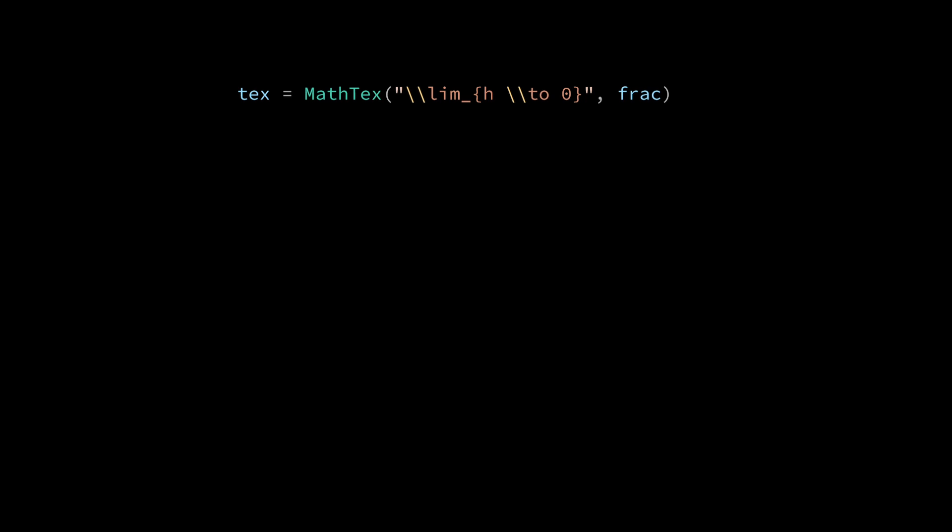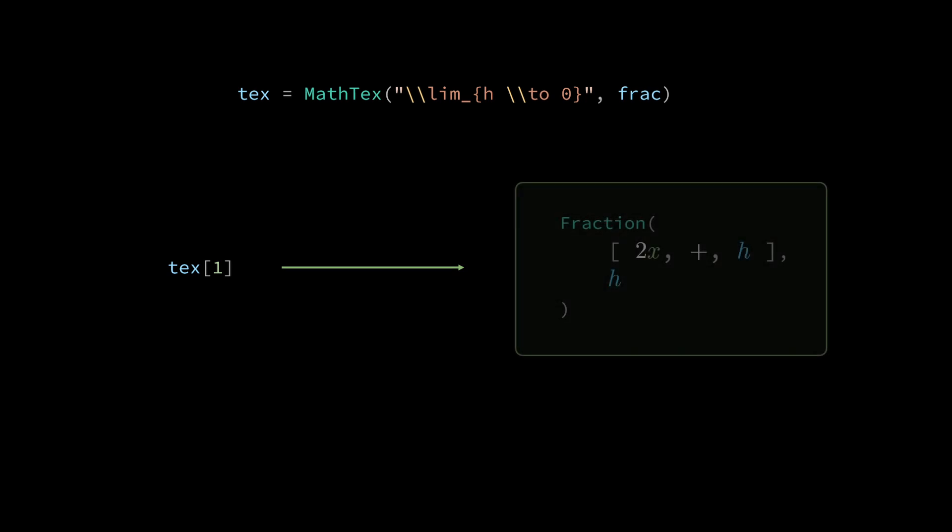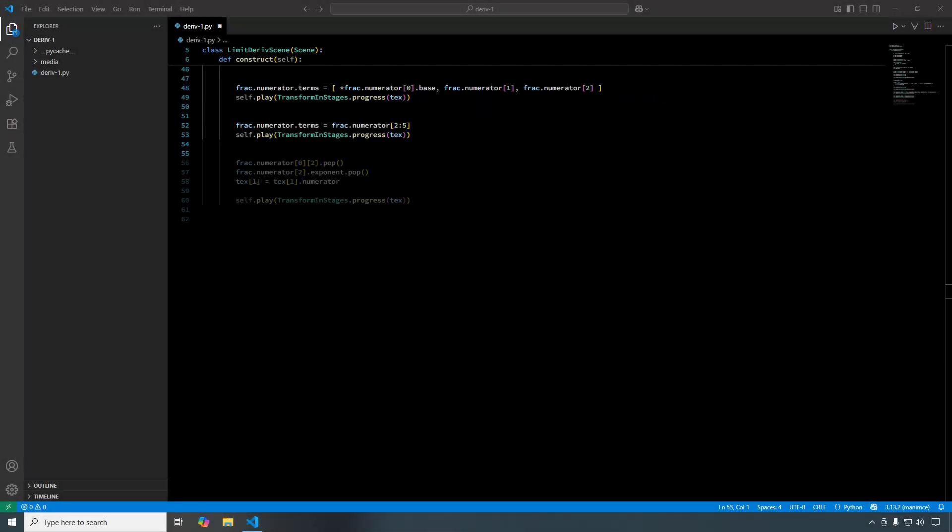We'll get rid of the denominator by removing the fraction component entirely. And just a reminder, the fraction is located inside the root math text at an index of 1. We'll reassign text1 to the fraction's numerator, bypassing the fraction altogether. We can do this with text1 equals text1 dot numerator. Here is the updated code. It's three lines of code for the three edits, and one line for the animation.